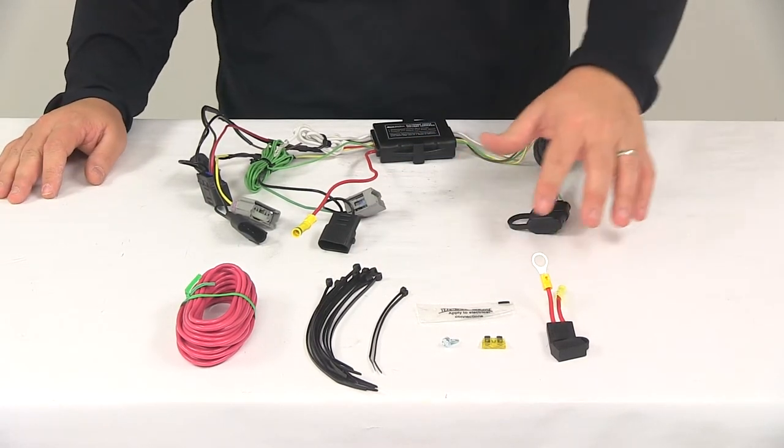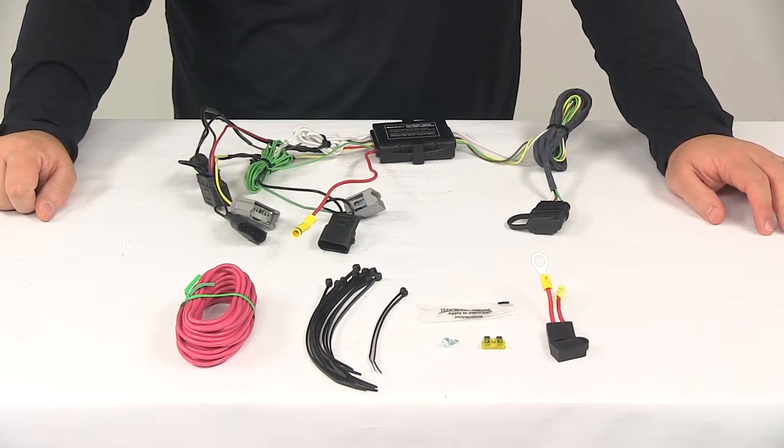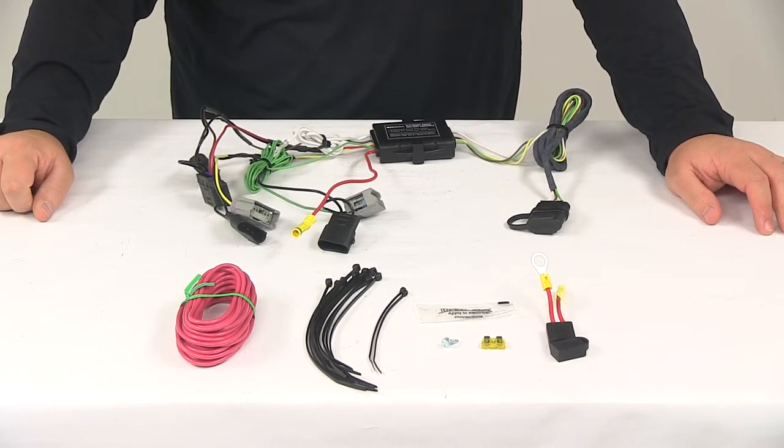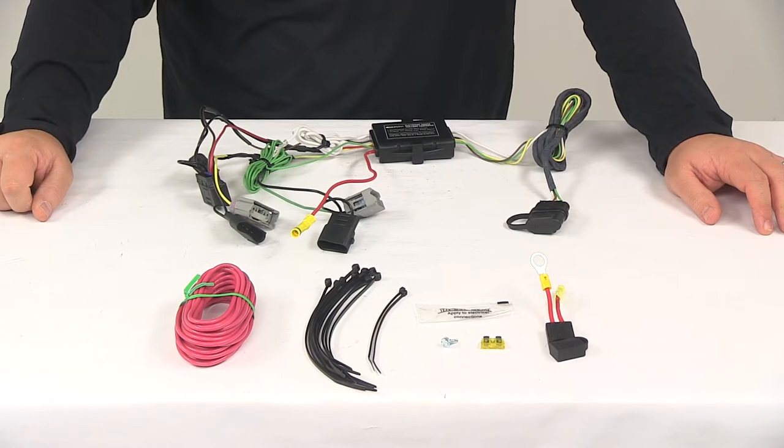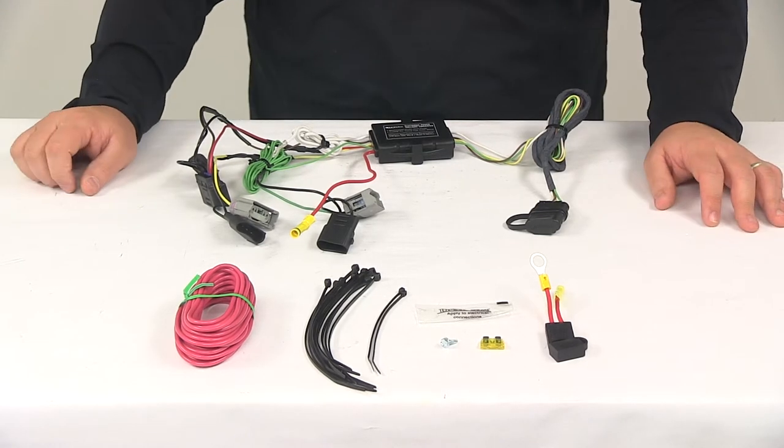Now once your installation is complete, the four-way connectors are going to be stowed beneath the vehicle near the trailer hitch. We do recommend using a mounting bracket to keep it secure and easily accessible. Mounting brackets are sold separately.